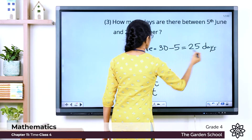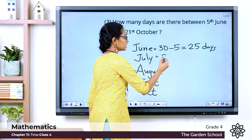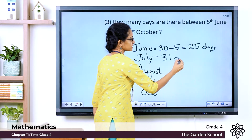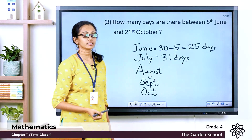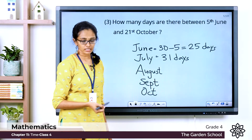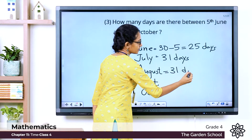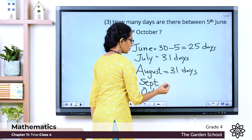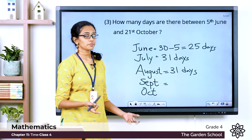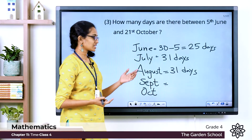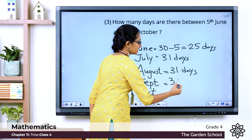July has a total of 31 days. August also has a total of 31 days. And September? As the rhyme says — 30 days have September, April, June and November — so September also has only 30 days.